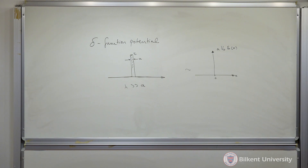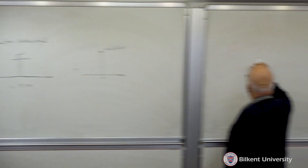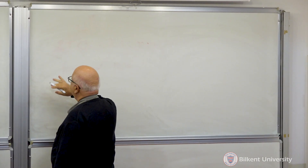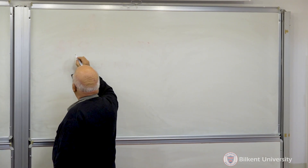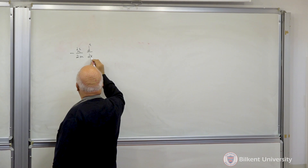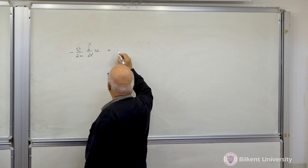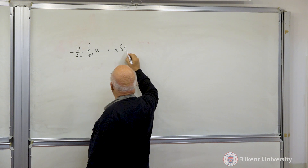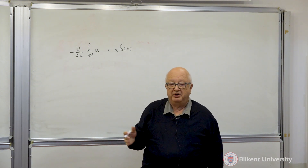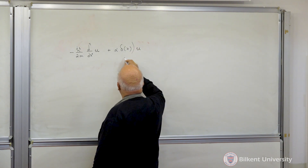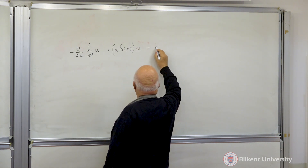Let me start a general discussion. Suppose I have my delta function barrier. The Schrödinger equation is: minus ħ² over 2m, d²u/dx², plus the delta function with some strength alpha times delta(x) — putting the delta function at the origin — times u, is equal to E·u.